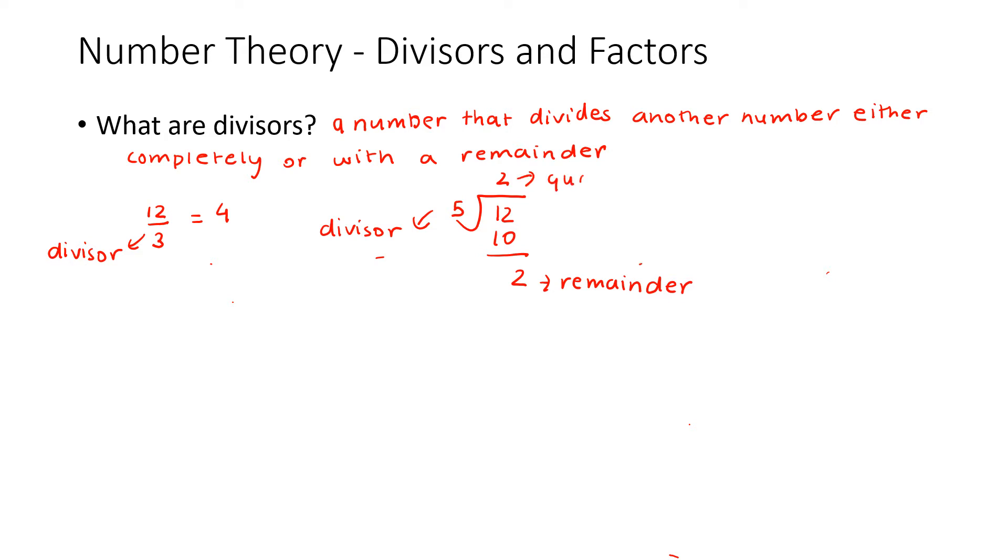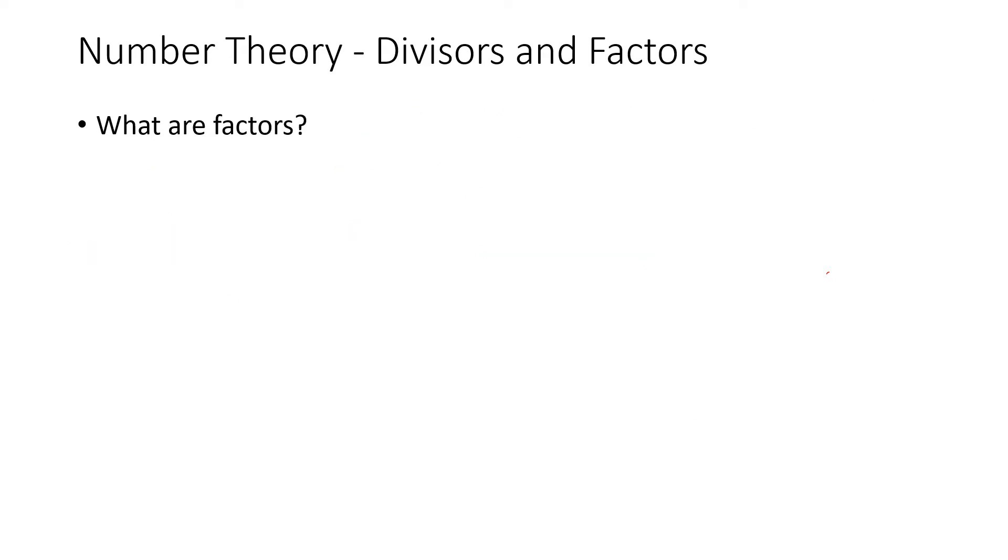Now what are factors? Factors aren't that different from divisors. The first definition is that factors are the numbers that we multiply to get another number. Another definition is that it's a number that divides another number completely, which means that there is no remainder.